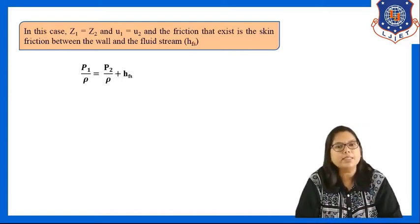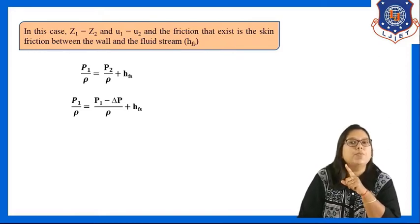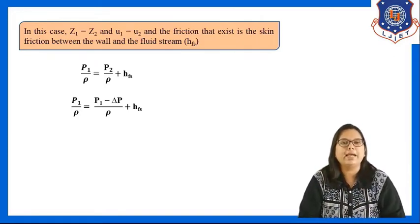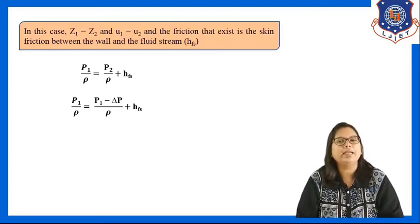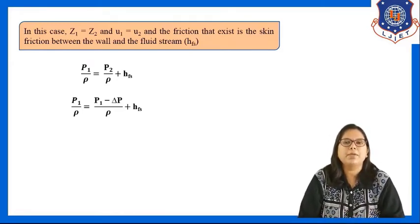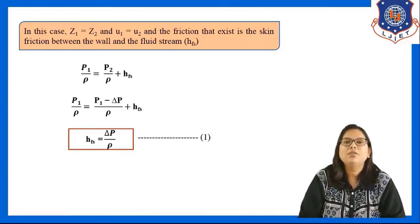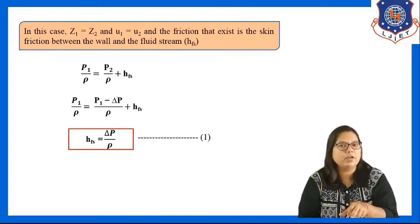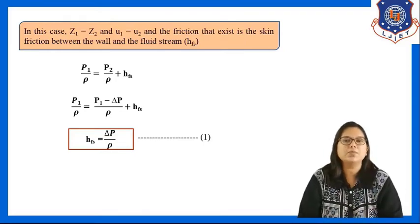The equation reduces to P1/rho = P2/rho + Hfs. Substituting P2 = P1 − delta P, we get P1/rho = (P1 − delta P)/rho + Hfs. The P1/rho terms cancel out, so Hfs = delta P / rho. This is Equation 1.